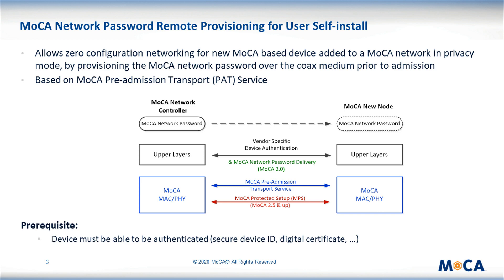To guarantee that the password is not provided to a rogue device, the new MoCA device must first be authenticated by the service provider. The device must include a feature that allows this authentication. This could be a secure device ID, a digital certificate, or any other object function of the authentication protocol selected by the service provider. This protocol is vendor or service provider specific. It runs over the MoCA MAC layer, and therefore is agnostic to MoCA.